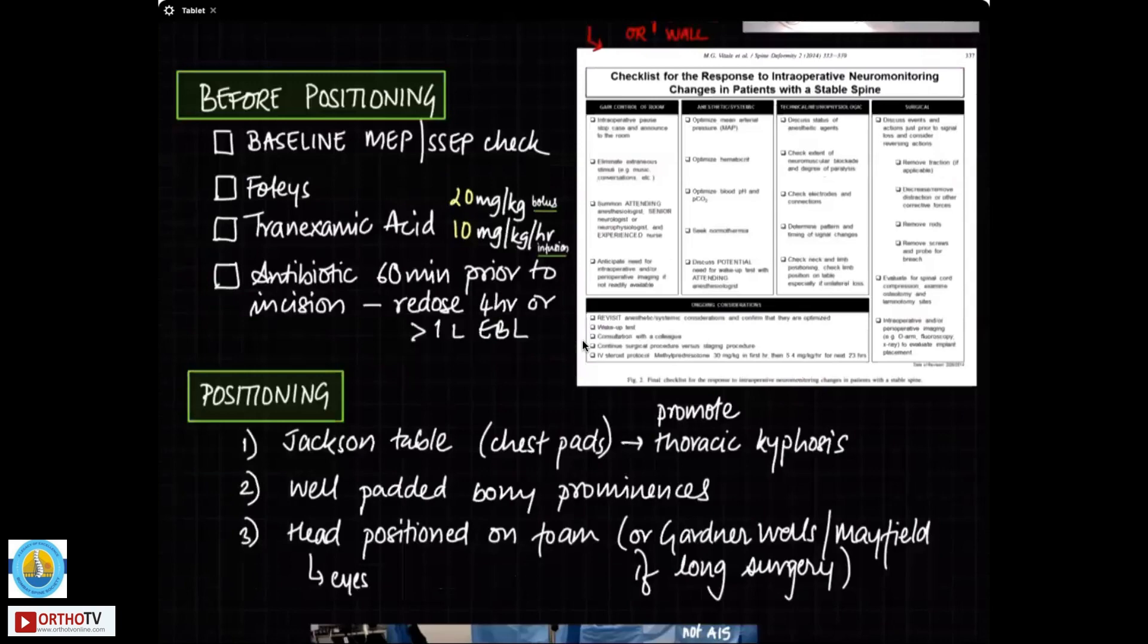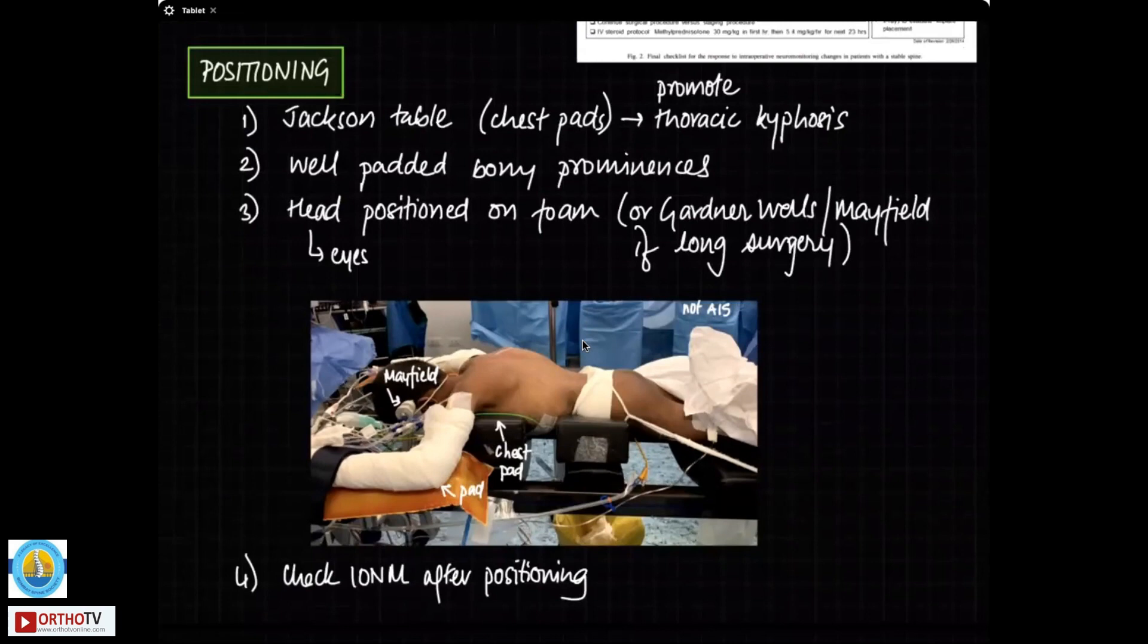Positioning of the patient, we do this on a Jackson table or if you don't have on a regular table, make sure that you have a chest pad like this. Now, these chest pads are important because this promotes thoracic kyphosis by pushing the chest this way. As you know, AIS are hypokyphotic patients. You make sure that all the bony prominences are well padded and the head is positioned on a foam device or sometimes if the surgery is very long, then we like to position the patient on a Mayfield or a Gardner Wells to take the pressure off the eyes completely.